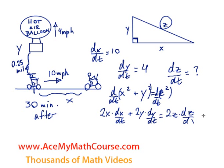The derivative of z² is 2z, and because we applied d/dt first we're left with a dz/dt factor. We can divide through by 2 to get rid of all the 2s, leaving x(dx/dt) + y(dy/dt) = z(dz/dt). Now we can plug everything in to figure out what dz/dt is going to be.